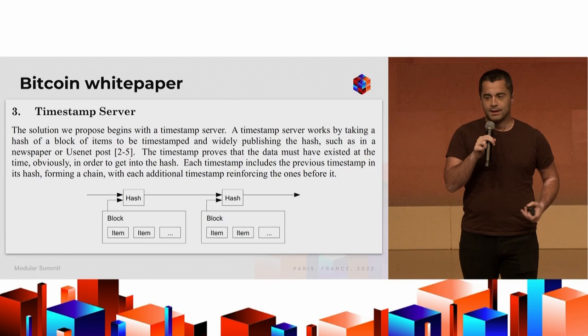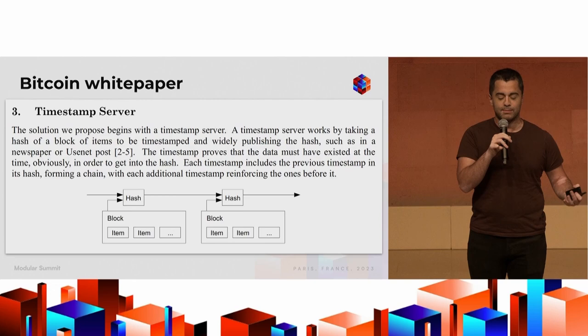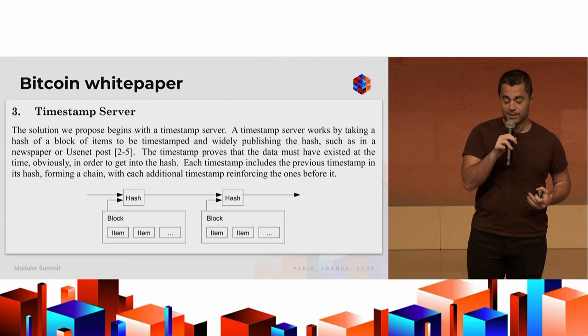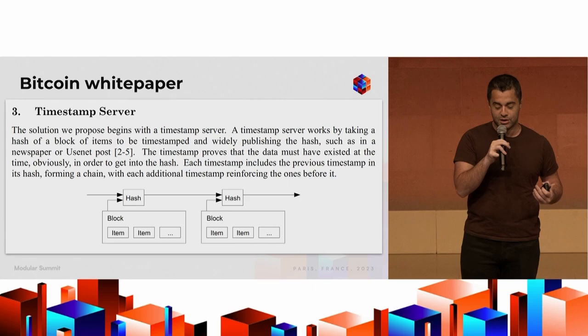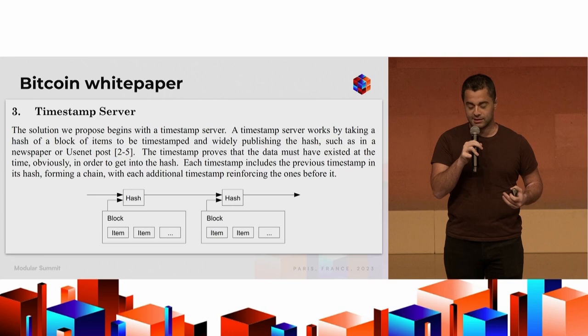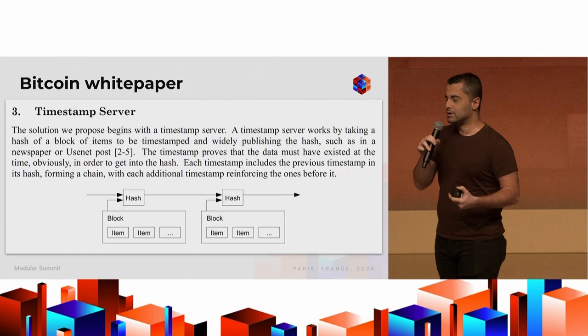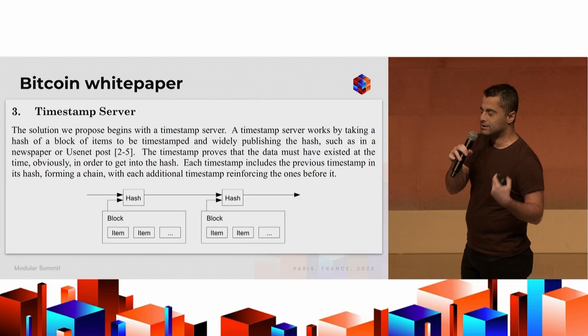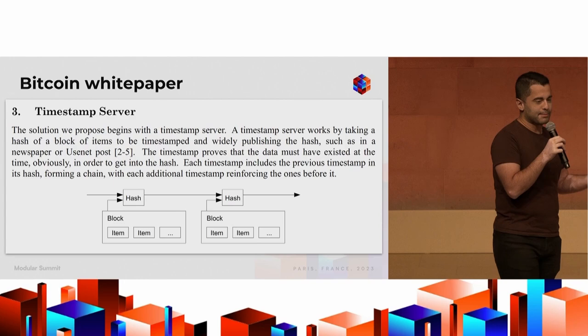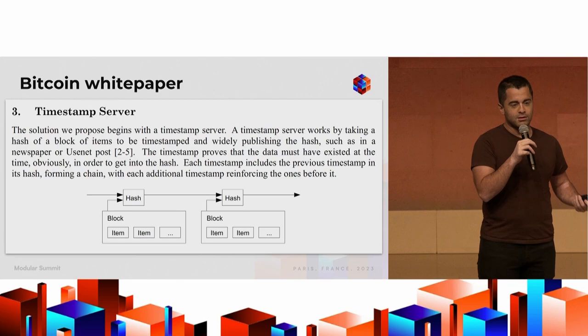Interestingly, if you go back to the original Bitcoin white paper, the proposed solution to the double spend problem was the idea of a timestamping server. A timestamp server works by taking a hash of a block of items to be timestamped and widely publishing the hash — such as in a newspaper or Usenet post. The timestamp proves the data existed at a certain time. This describes the core thing a blockchain provides: all data is made available and timestamped. If you have this primitive — a timestamping server, basically a consensus and data layer — you can build anything on top of it using any execution environment.